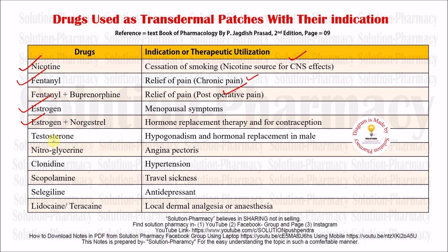The next drug is testosterone — the male sex hormone — used for hypogonadism and hormonal replacement therapy in males. The next important drug is nitroglycerin, used for the treatment of angina pectoris. Angina pain is characterized by left-side chest pain due to lack of oxygen supply caused by plaque formation, blood clot, atheroma, or spasm of the coronary artery, and can be managed with nitroglycerin.